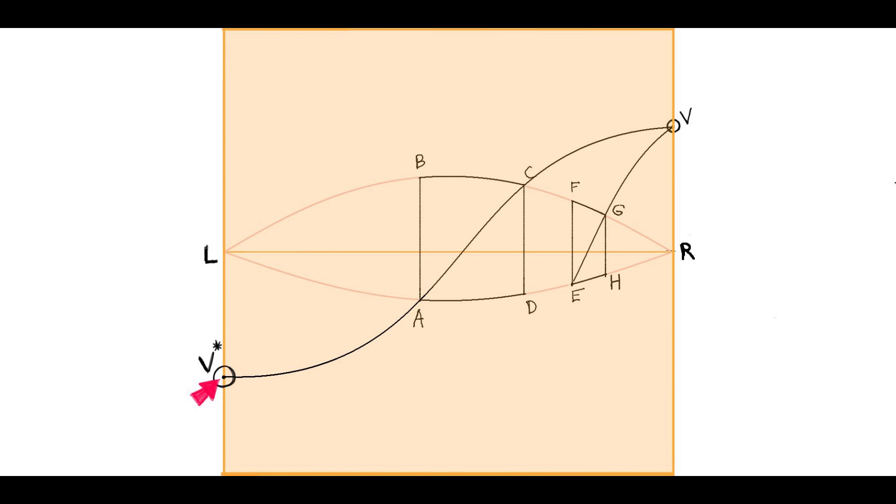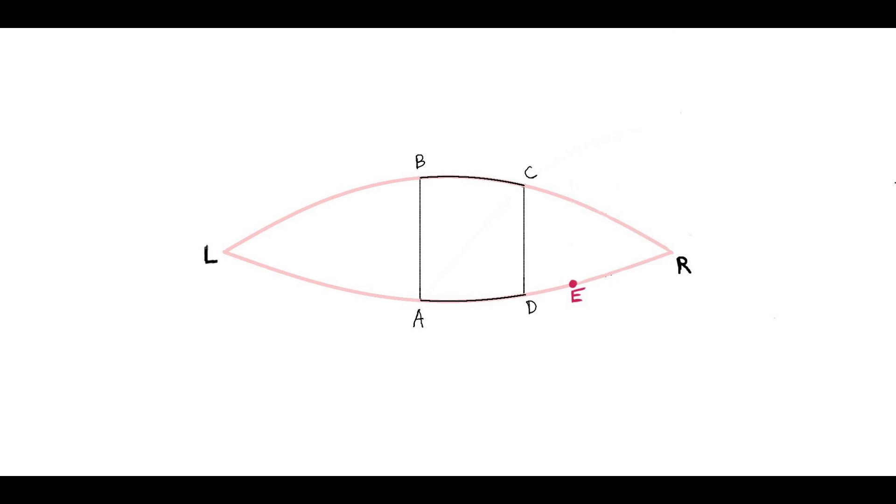Before we end, I would like to leave you with a question. Notice that up to now, we just used parallel transport to slide along the wall. We shifted the rectangle to the right. Can you shift it to an arbitrary point X anywhere in the picture? How would you go about it?